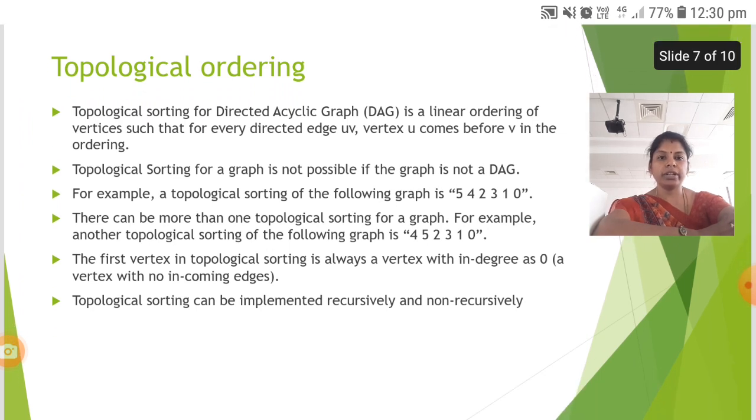The next is the topological ordering. Topological sorting for a directed acyclic graph is a linear ordering of vertices such that for every directed edge UV, vertex U comes before V in the ordering.